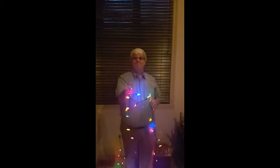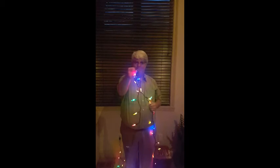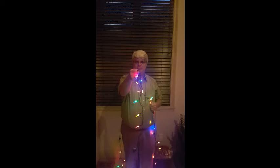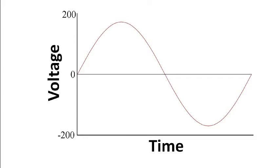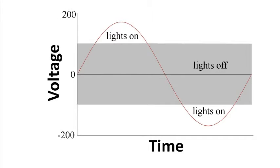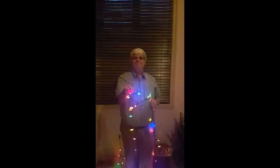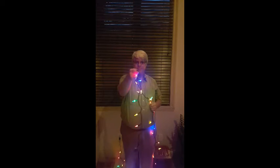Why? Well, even though it doesn't look like it, these LED Christmas lights are turning on and off continuously. The electricity that's powering them is alternating current. An alternating current alternates the voltage from zero to positive 170 to negative 170, and that happens 60 times every second. The LEDs only light when the voltage is right, so when the voltage gets too close to zero, they turn off. The voltage has to be highly positive or highly negative for them to turn on. So even though it doesn't look like it, these lights are turning on and off continuously.